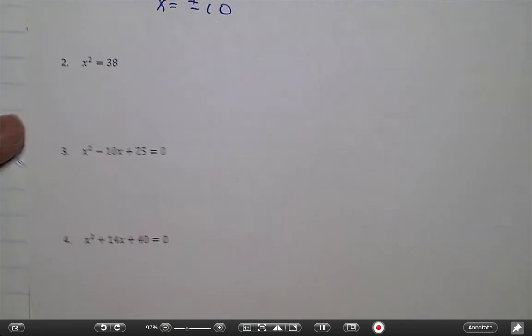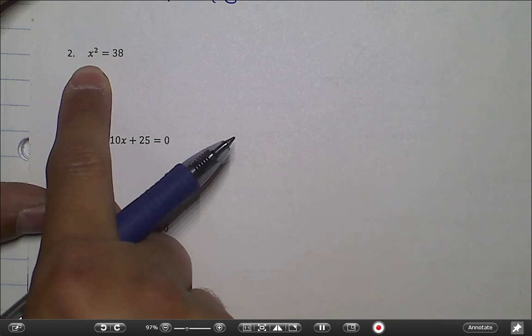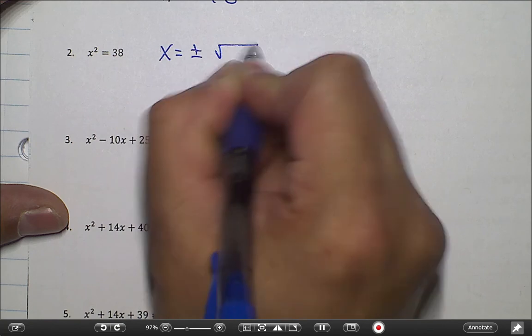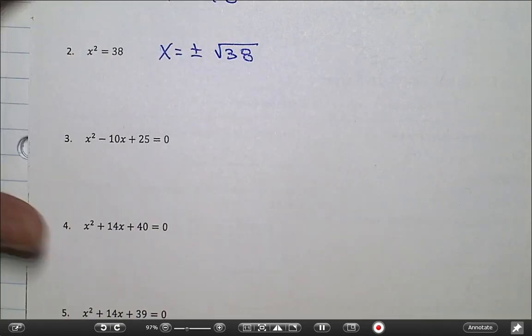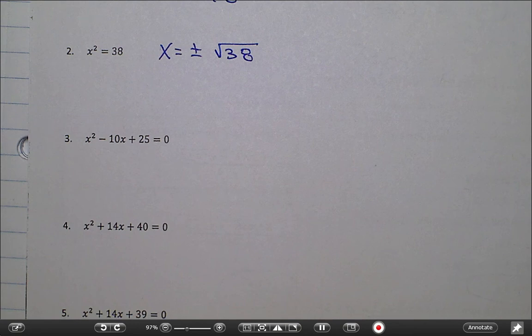Okay, for number two, something similar — same thing, undo a square by square rooting. x equals plus or minus the square root of 38. Now, is there any factors there? Does that factor? No, because it's going to be 19 times 2. So on this one the radical doesn't factor any further, so I just leave it like that — leave it as a square root.